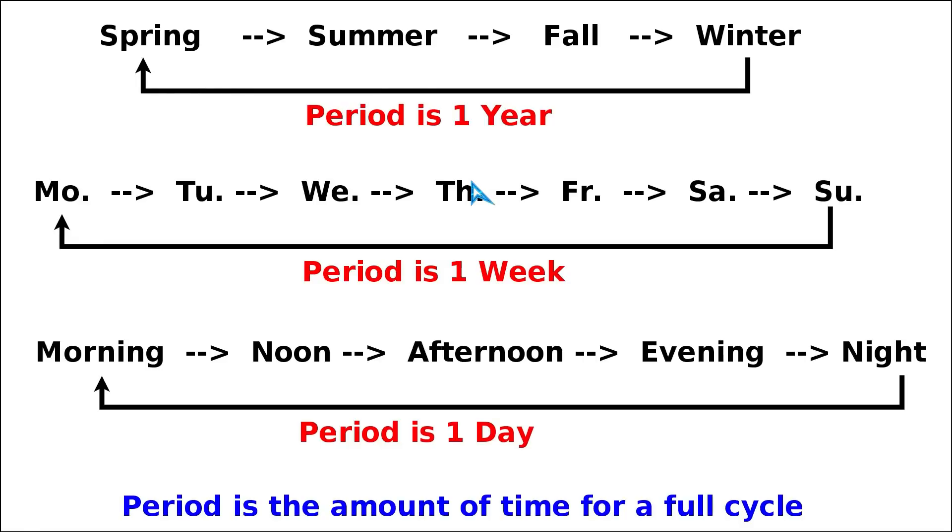One year is a really long time, so we rather tend to think in terms of weeks, where we start from Monday, go through all the days, do our job, get a little break, and then it starts over again. In the case of a weekly routine, the period is one week. For a daily routine, the period is one day.